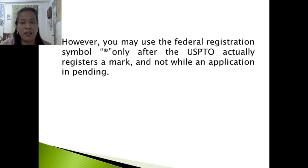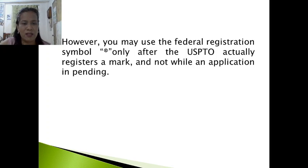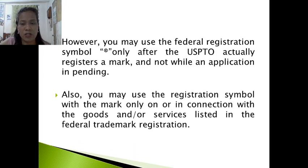You may use the federal registration symbol ® only after the USPTO actually registers a mark, and not while an application is pending. At home, try to look at items like shirts and clothes to find logos — check whether the TM or ® symbol is used. You may use the registration symbol only on or in connection with the goods or services listed in the federal trademark registration.